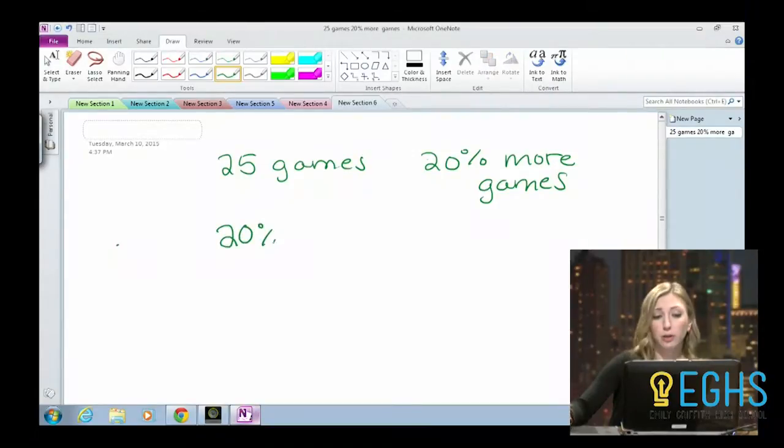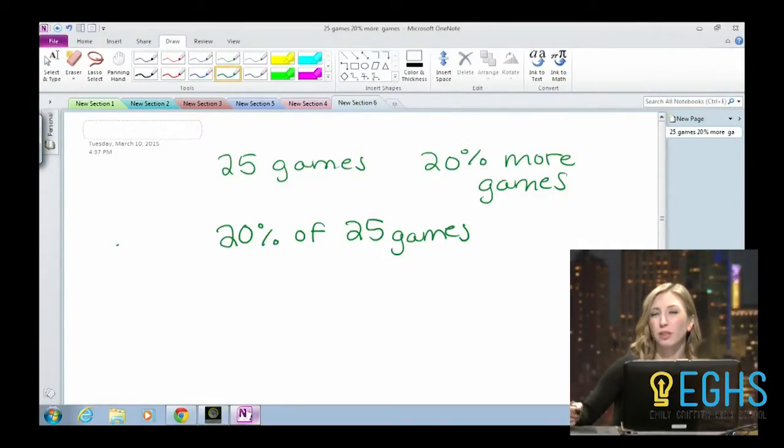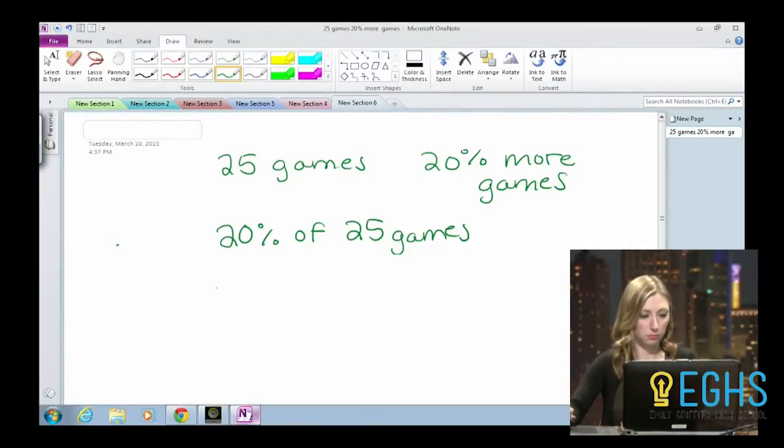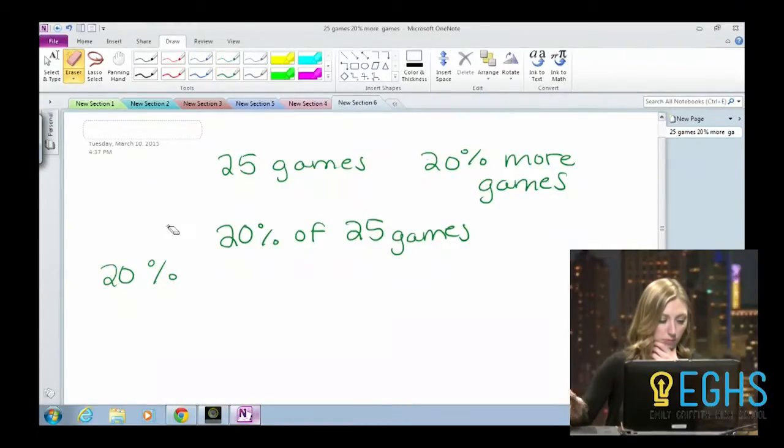Alright, I'll go through it with you just to make sure. If we were finding 20% of 25 games, because we want to find out what that is first before we add it to it, what you do is you take that 20% and you turn it to a decimal. Do you know what that would be as a decimal? It's kind of glitchy, so it's kind of hard to hear. Do you know what the 20% would be as a decimal? Not really, no. That's okay.